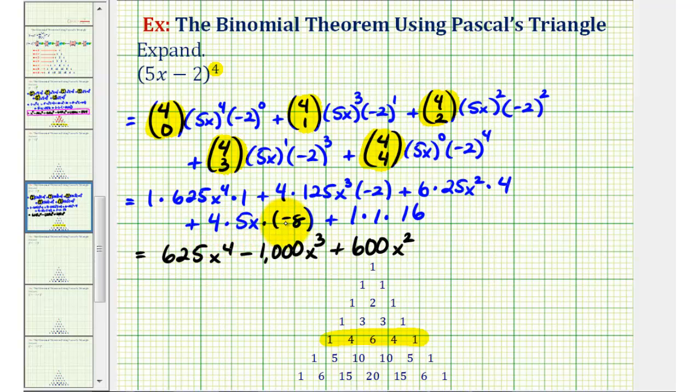Next, we have 4 times 5 times negative 8, that's negative 160 times x, so minus 160x. And then finally, we have 1 times 1 times 16, so we have plus 16.